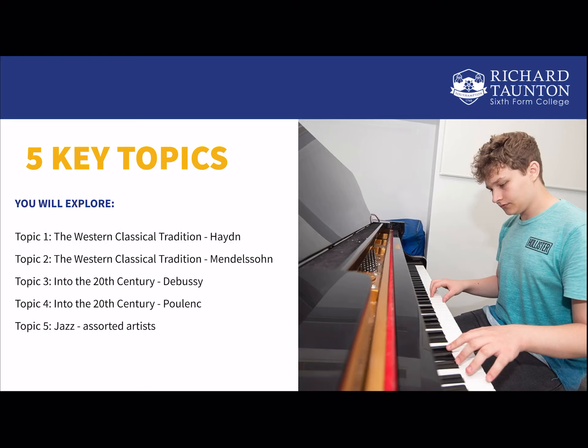On this course we'll be studying lots of classical music. The first two topics feed into the history of the symphony — we look at two symphonies, one by Haydn and one by Mendelssohn, and look at how the symphony has changed over time. Topics three and four are all about 20th century art music and we study two set works, one by Debussy and one by Poulenc. Finally, we look at jazz and study a range of different artists, looking at the different genres of jazz through time.